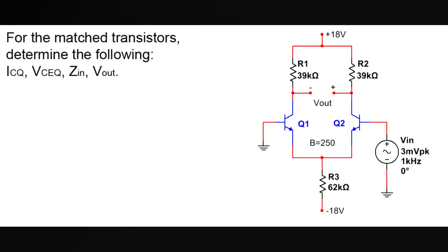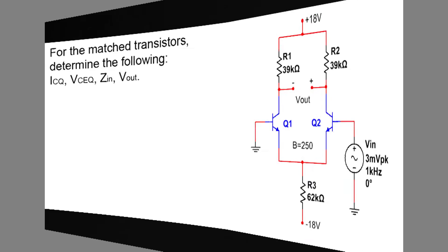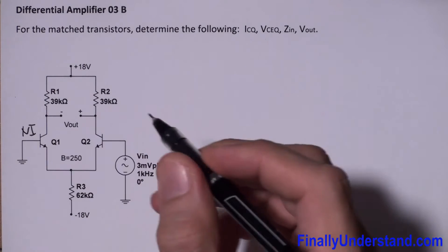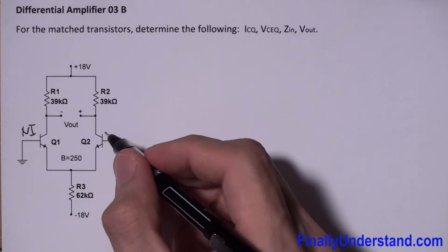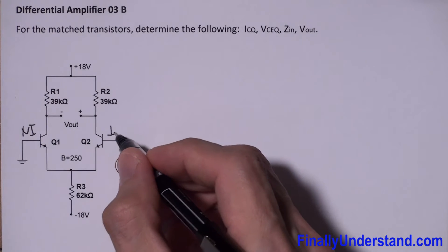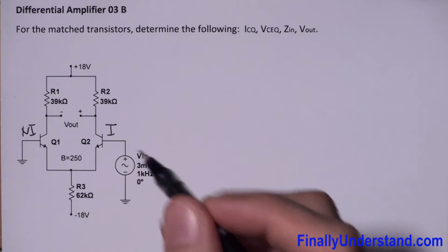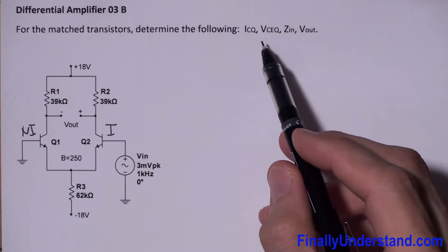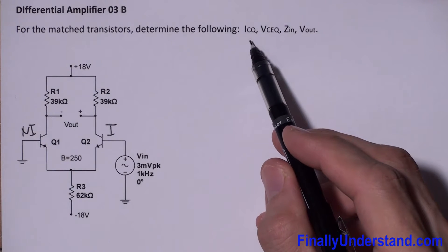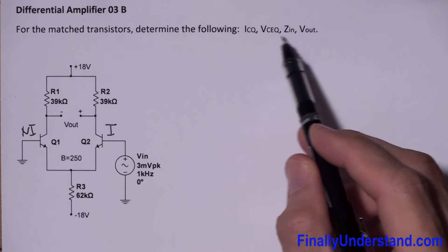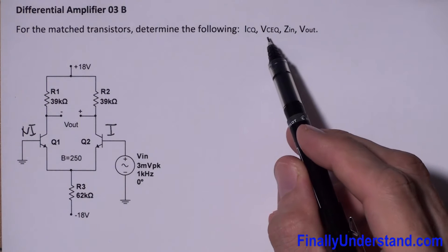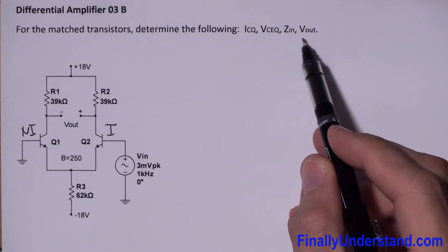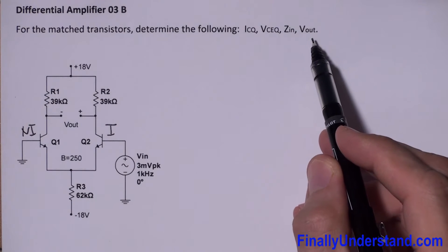Let's take a look at this example. At the left side we have the non-inverting input and at the right side we have the inverting input. We're supposed to find the following quantities: ICQ, VCEQ, ZIN, and VOUT.